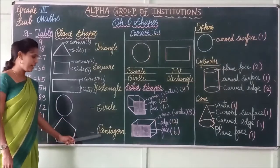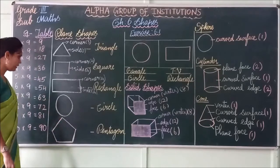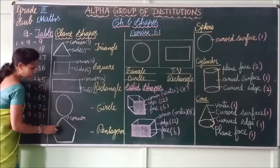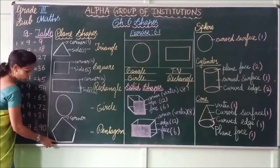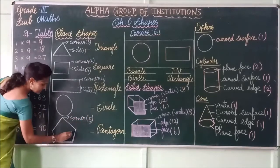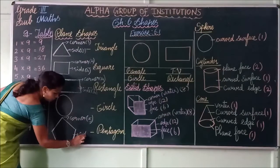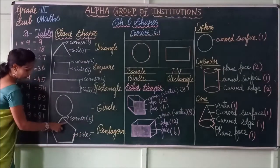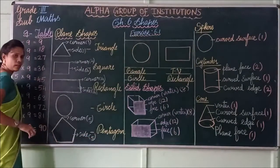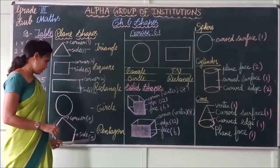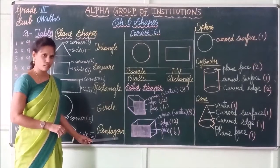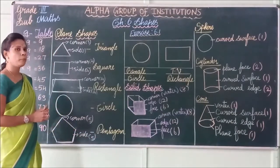Next one — this is the pentagon. How many corners are there? Shall we count? 1, 2, 3, 4, 5 — so there are 5 corners. And how many sides? 1, 2, 3, 4, 5 — so 5 sides. So the name of this shape is pentagon. These are all plane shapes.